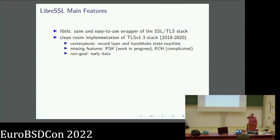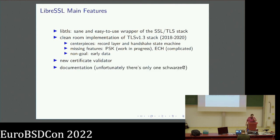One thing we don't support and won't support is early data — zero round-trip time data — which would be nice performance-wise but is a bit iffy security-wise. Another main feature is a new certificate validator, which I'll talk about later. It was written by Bob. I also count documentation as a feature. We have lots of documentation written by Ingo Schwarze. Unfortunately there's only one of him, which means we don't have the capacity to document 3,000 functions in the meticulous manner that he does. We have at least 50 manuals that landed in the last year, sponsored by Genua, but still lots of stuff is undocumented.